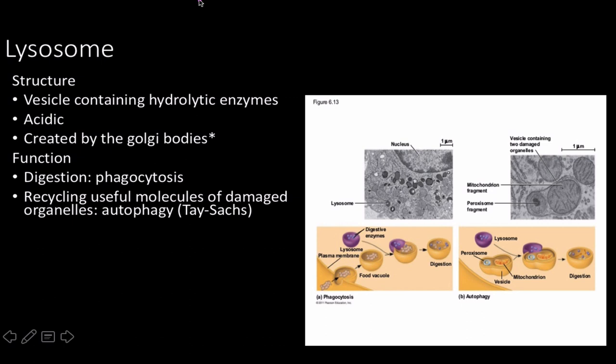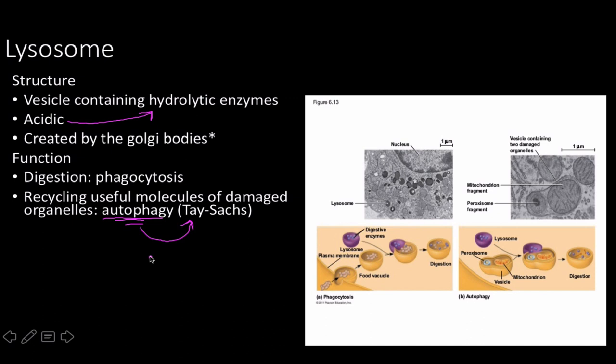Next is the lysosome. Its structure is a vesicle containing hydrolytic enzymes with an optimal pH of around three or four — acidic conditions, similar to your stomach. It's created by the Golgi bodies, and it's one of the few things the Golgi makes that isn't embedded in the membrane and actually stays within the cell as part of the endomembrane system. Its functions are digestion — through the process of phagocytosis, where the lysosome fuses with an endosome to form a phagolysosome and breaks down whatever the cell ingested — and recycling molecules from damaged or non-functional organelles, a process called autophagy.